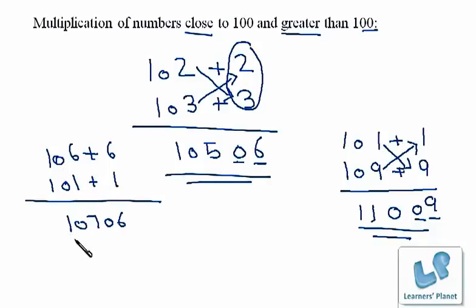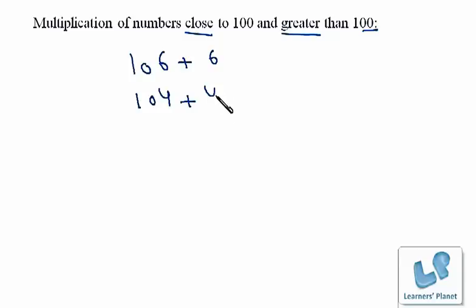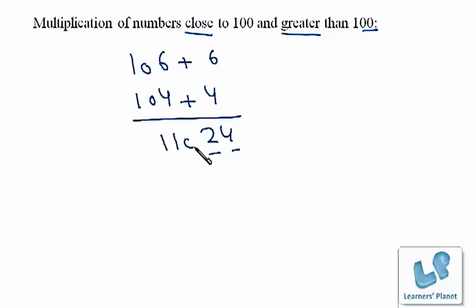Now let's see what we do when the product of the two surplus digits is two digits itself. We'll take the example of 106 and 104. This is plus 6 and this is plus 4. Now 6 multiplied by 4 is 24, which already fills two digits, so we don't need to put a zero. Now we add 106 plus 4 to get 110. So the product of 106 and 104 is 11024.